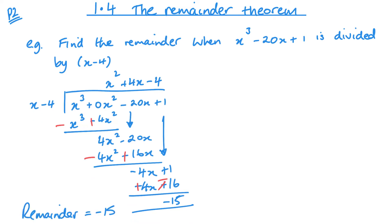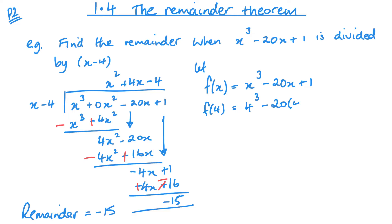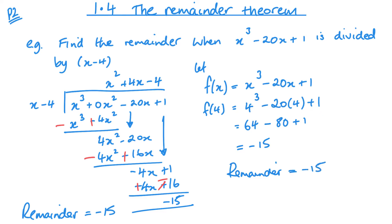Now let's use the remainder theorem. The remainder theorem is very much like the factor theorem — I first want to start by letting f of x equal my function. Then I need to substitute in my root, which in this case is positive 4, so I'm looking at f of 4. So we get 4 cubed minus 20 lots of 4 plus 1, which gives 64 minus 80 plus 1, equalling negative 15. You can see it's so much quicker to use this method.